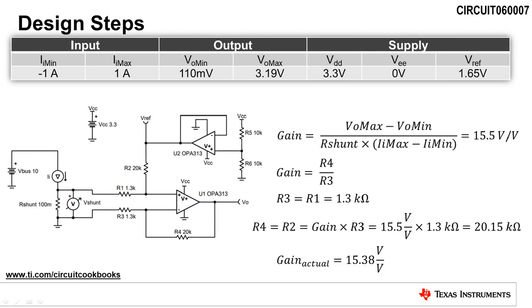The next step is to calculate the gain of the circuit, which is calculated by dividing the output voltage swing by the input voltage swing. Remember that the input voltage of this circuit is equal to the load current times R shunt. So the gain is calculated by the output voltage swing divided by the load current range times R shunt.